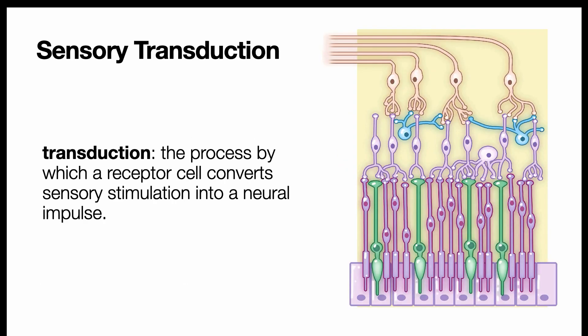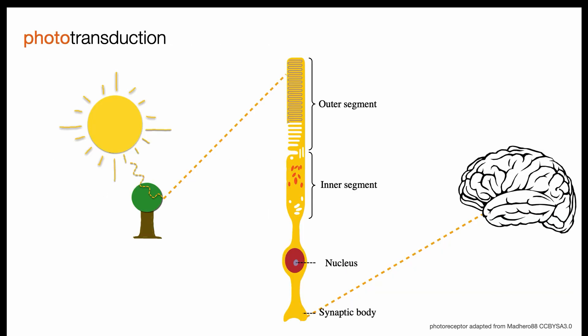So sensory transduction is the process by which a receptor cell converts sensory stimulation into a neural impulse. For example, in phototransduction, light becomes a neural impulse. The outer segments of photoreceptors contain photopigments embedded within their membranes that absorb photons of light, and this changes their composition and causes them to generate electrical signals.